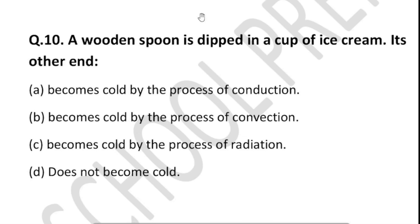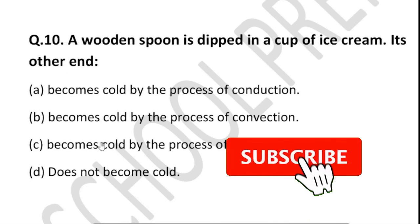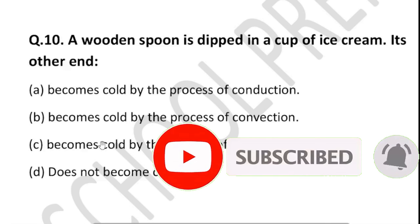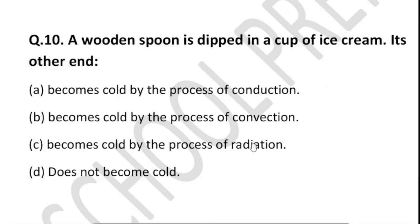The next question: a wooden spoon is dipped in a cup of ice cream. Will the other end become cold? The answer is no, because wood is a poor conductor of heat — it is an insulator. Therefore heat transfer will not occur through a wooden spoon and the other end will not become cold.